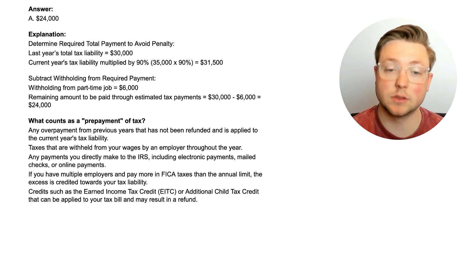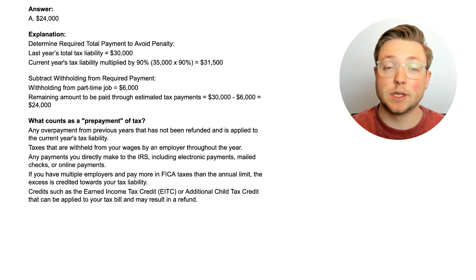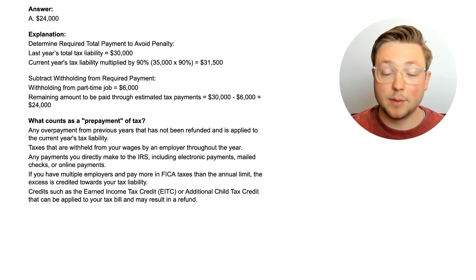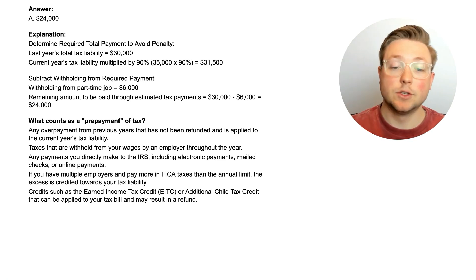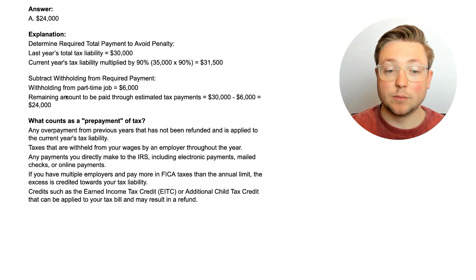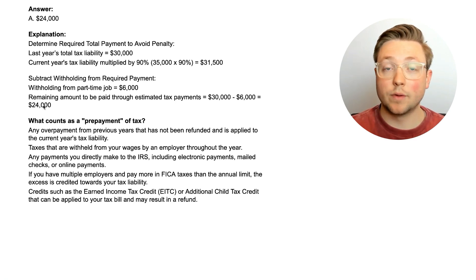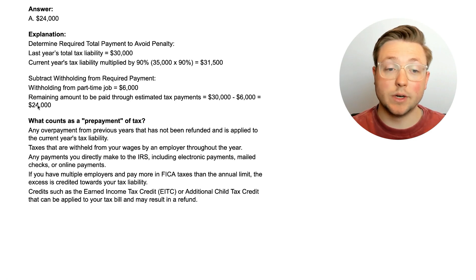The answer was $24,000. To determine the total payment to avoid penalty, first we decide whether to take 100% of last year's tax liability or 90% of the current year's. Last year's tax liability was $30,000, and 90% of $35,000 is $31,500. So she takes 100% of the previous year's tax liability because that's smaller. Then you subtract the $6,000 withheld from her part-time job, leaving $24,000 in estimated tax payments needed.